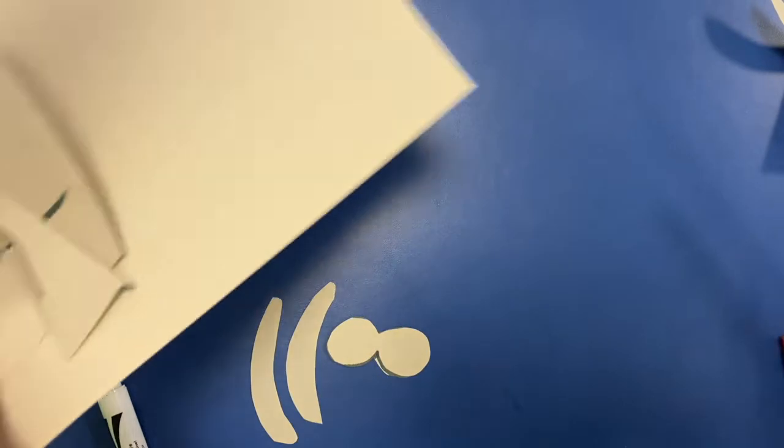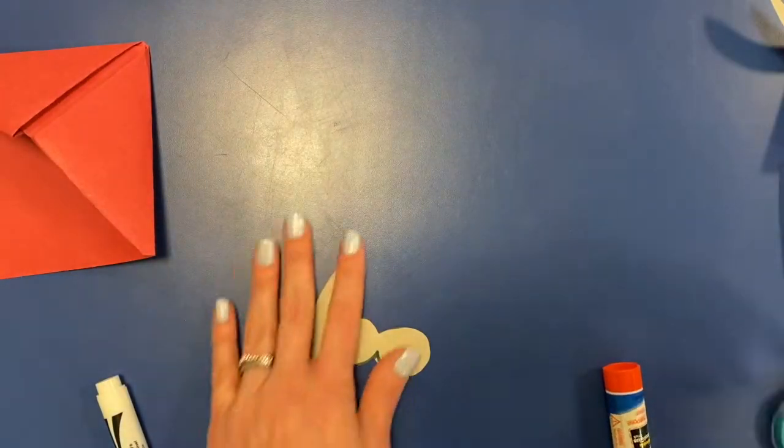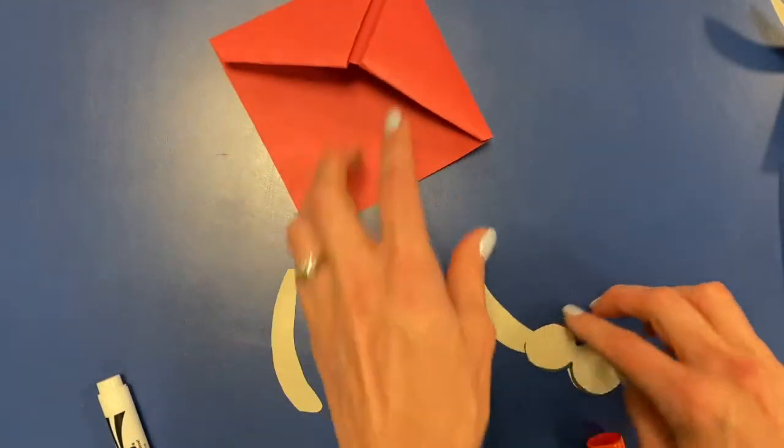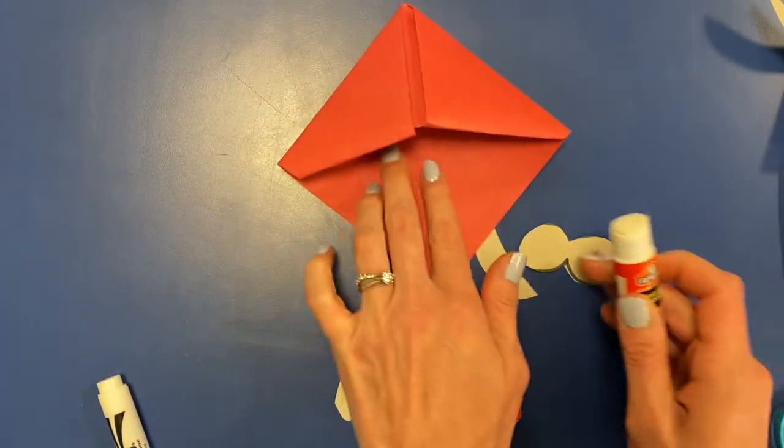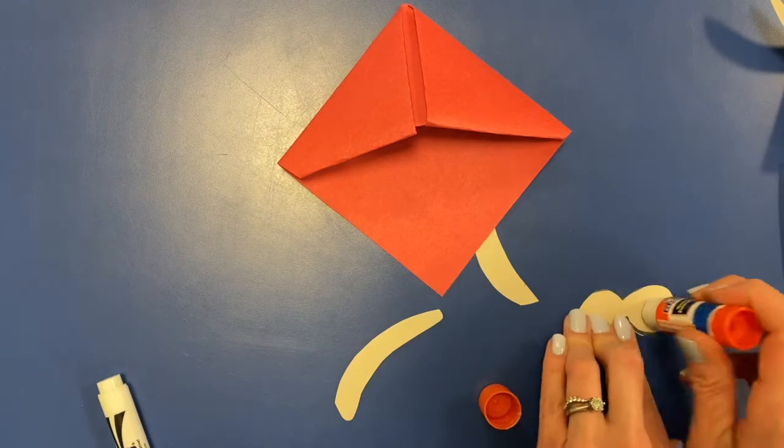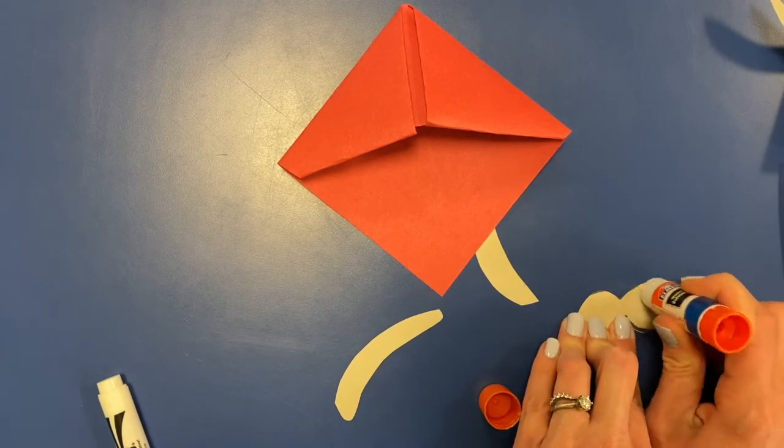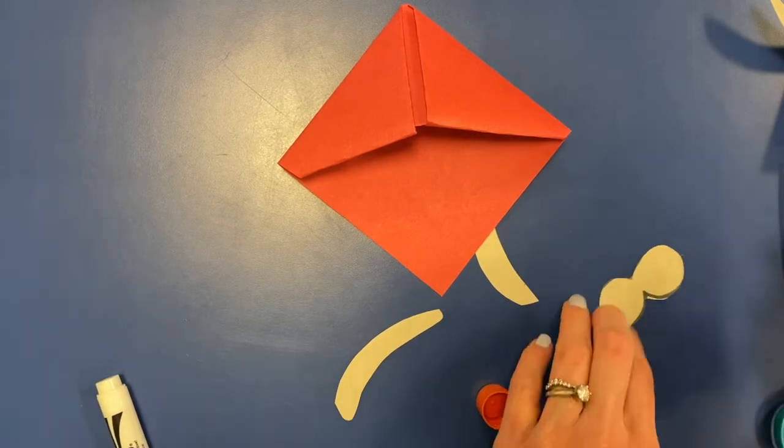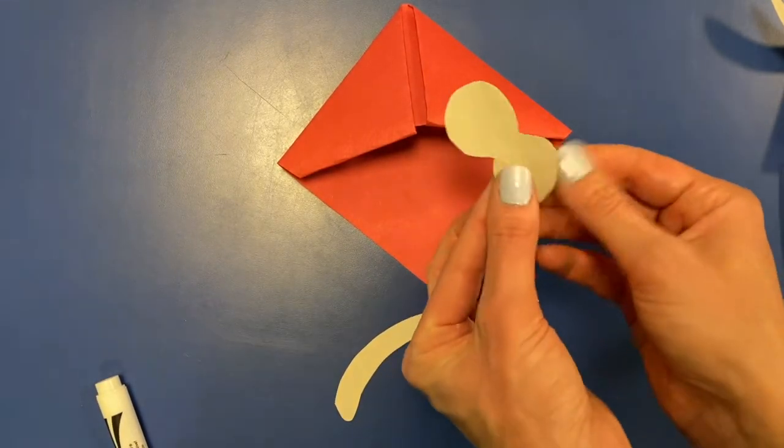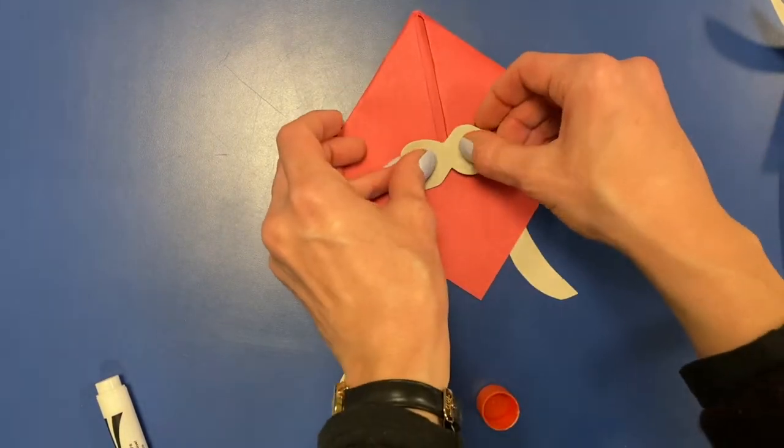Now that we have our horns and our nose we're gonna get our glue stick and we're gonna glue these onto the body of the Ox. Nose goes right here.